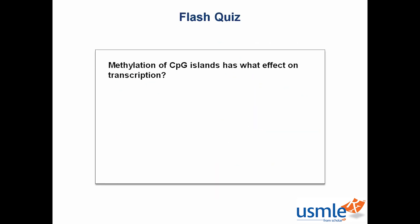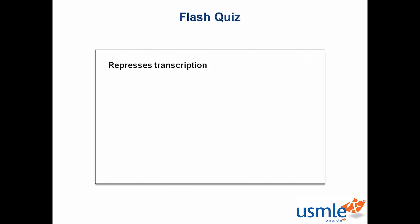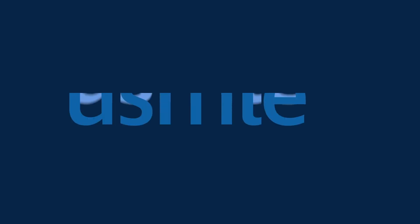Here's our first flash quiz. We'll be doing a lot of these throughout the chapter. Methylation of CpG islands has what effect on transcription? The answer is it represses transcription. Remember, methylation makes DNA mute. And methylation of histones generally represses transcription as well by making them heterochromatic instead of euchromatic.